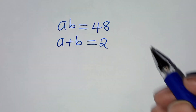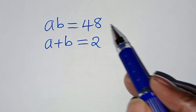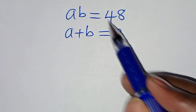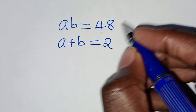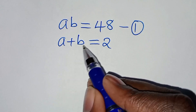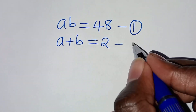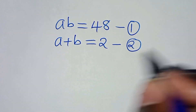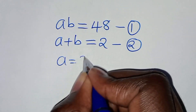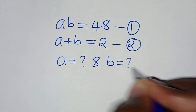Hello everyone, you are welcome to solve this nice algebra problem. We have a times b equals 48 — let's call this equation 1. And a plus b equals 2 — let's call this equation 2. So what is the value of a and what is the value of b?